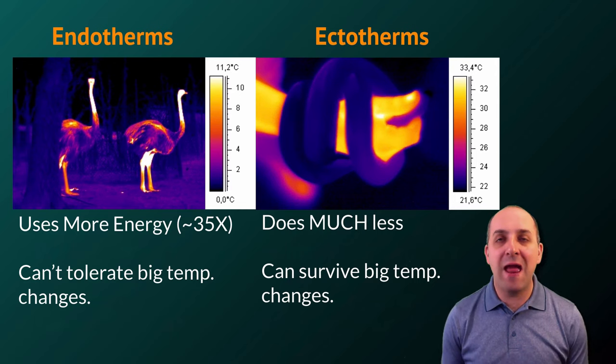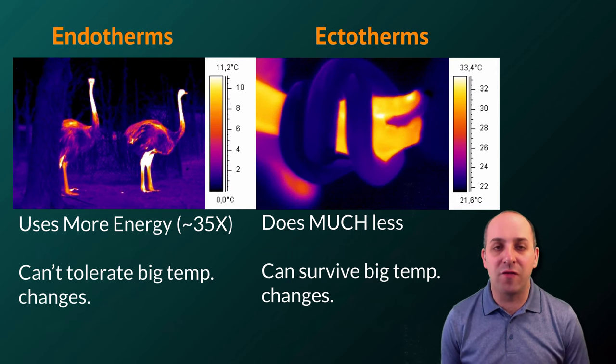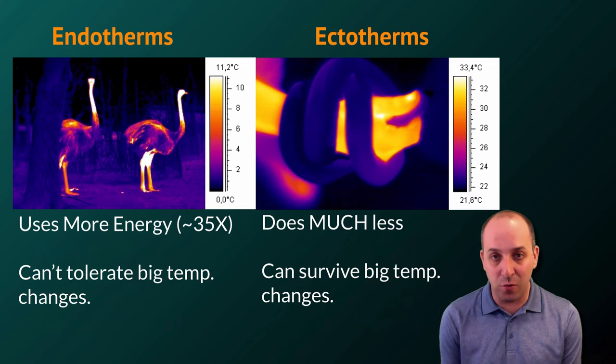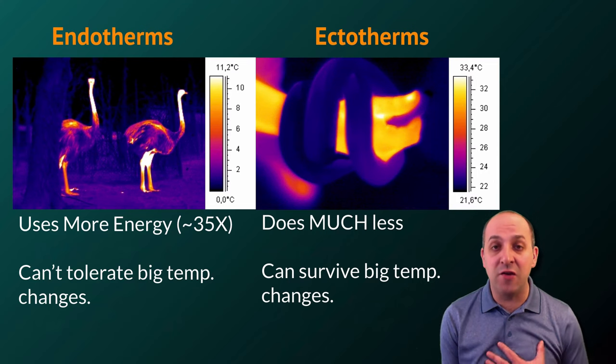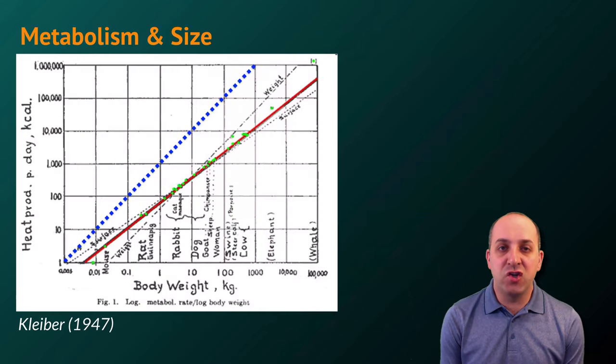Ectotherms do much less, but endotherms can't tolerate the sorts of big temperature swings in the environment that ectotherms do without engaging in various strategies needed to regulate their internal temperature and keep it within the acceptable range.